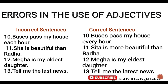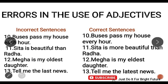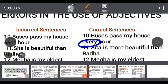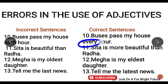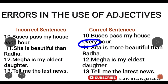Tenth error: 'Buses pass my house each hour' — this is incorrect. The correct sentence is 'Buses pass my house every hour.'